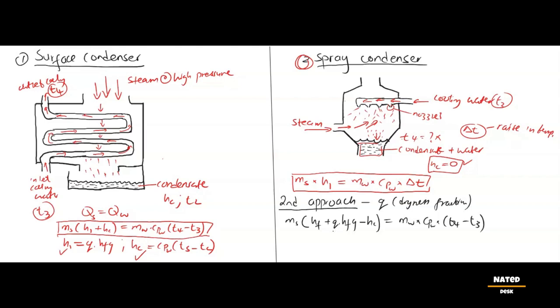These gases, such as air, need to be removed from the condenser to maintain the vacuum condition. To achieve this, vacuum pumps are used to extract these gases and maintain the desired vacuum level. So we apply Dalton's Law Regarding Partial Pressure.